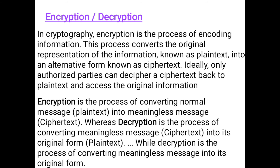Next utility program is encryption and decryption. In cryptography, encryption is the process of encoding information. This process converts the original representation of the information, known as plaintext, into an alternative form known as ciphertext. Ideally, only authorized parties can decipher a ciphertext back to plaintext and access the original information. So encryption is the process of converting a normal message (plaintext) into a meaningless message (ciphertext), whereas decryption is the process of converting a meaningless message (ciphertext) back into its original form (plaintext).